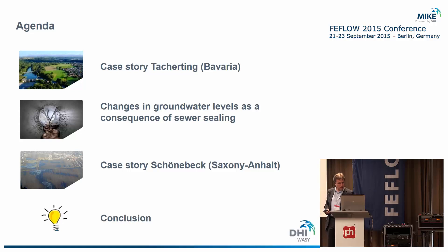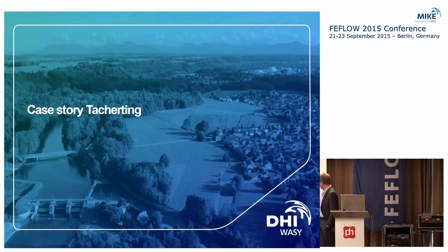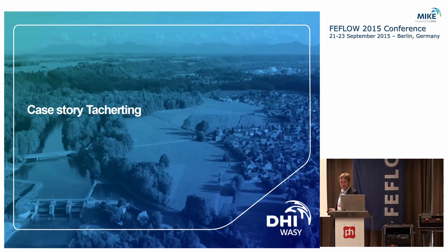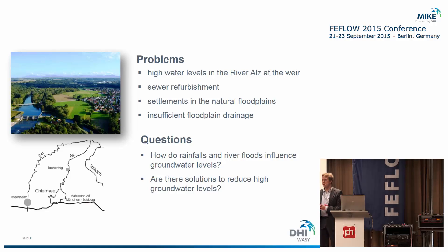I will start with the village in Bavaria. There is a river located with a weir, and some years ago they raised the impounded water level by a few centimeters to generate more energy. There is also an old river branch which is now closed. In 2013 there was a heavy storm rainfall event and many flooding problems with rising groundwater heads. The key questions were: what is affecting the groundwater floods most — the rainfall or the river flood — and are there solutions to reduce this in the future?